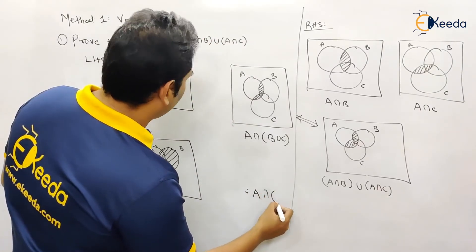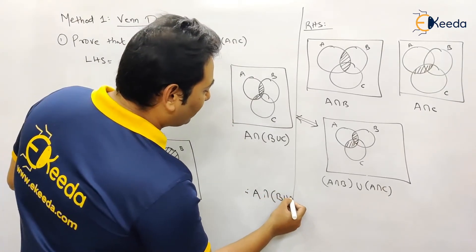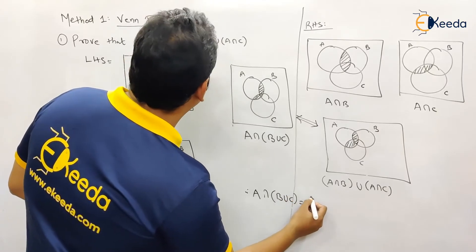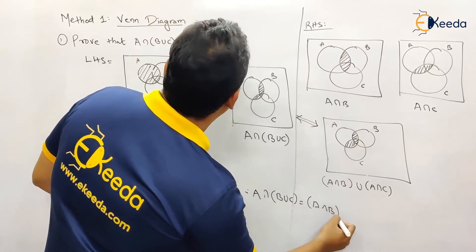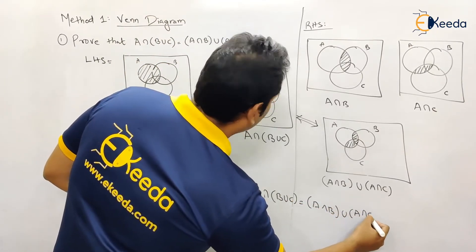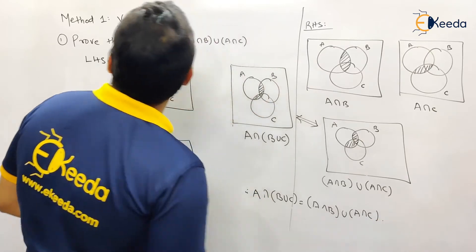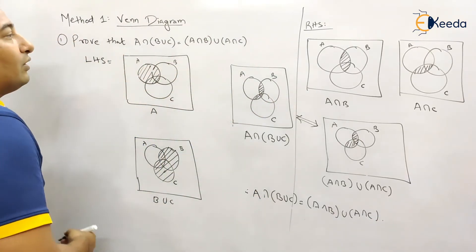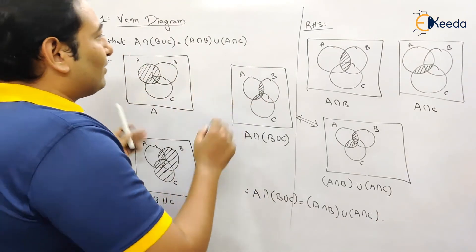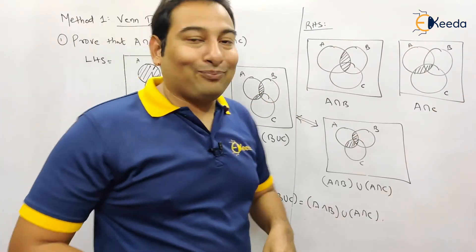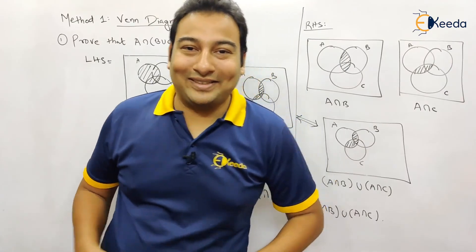So this is the equivalence we proved by using Venn Diagram. I hope this is clear. In the next video, we'll be discussing two more examples on Venn Diagram. Thank you.